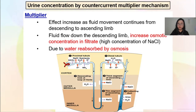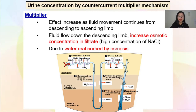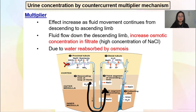Multiplier — the effect will increase as fluid movement continues from descending to ascending limb. When the fluid flows down the descending limb, they increase the osmotic concentration in the filtrate. That means when it is going down, there is a high concentration of sodium chloride in the fluid in the loop of Henle, because water is being absorbed by osmosis. Increased osmotic concentration means high concentration of NaCl. The fluid in the nephron at this stage we call 'fluid' or 'filtrate', not urine yet.